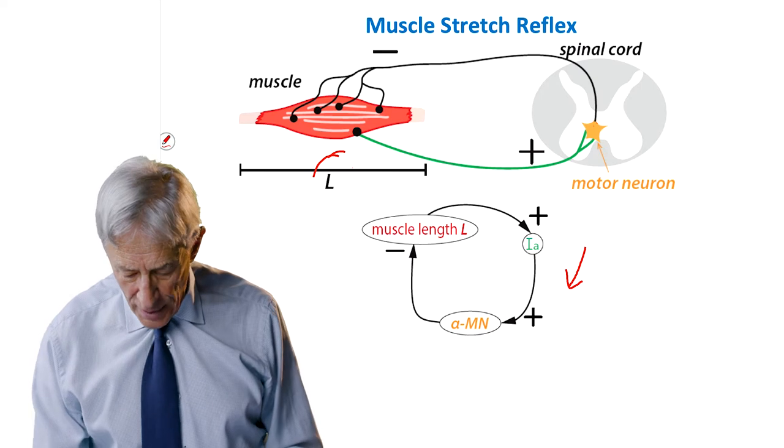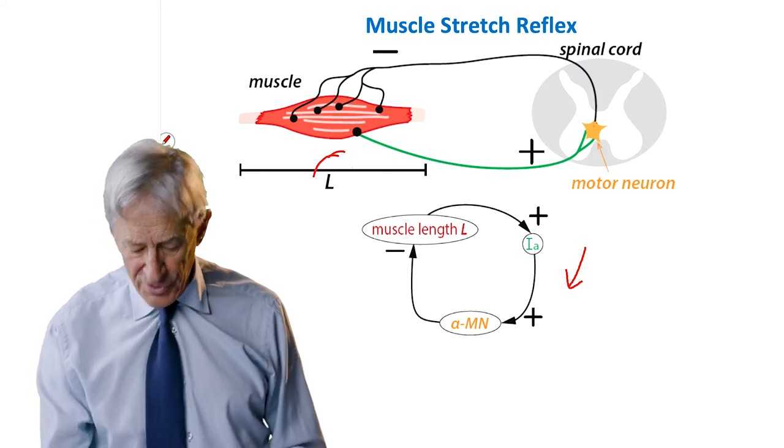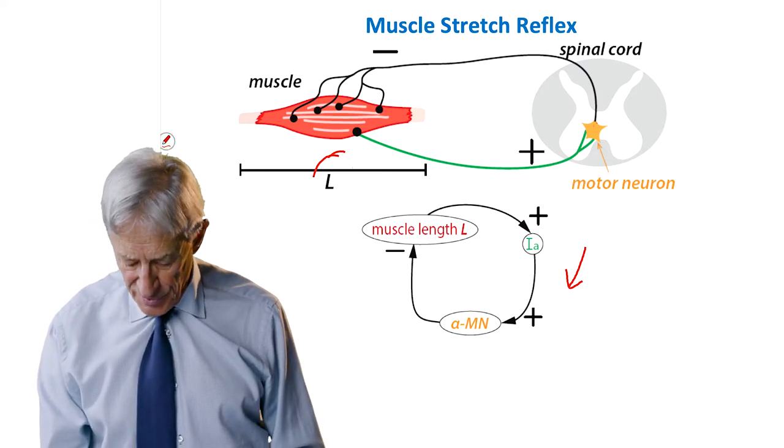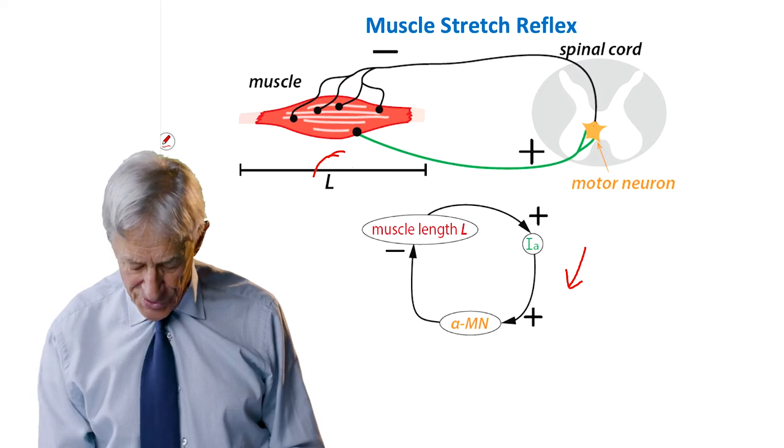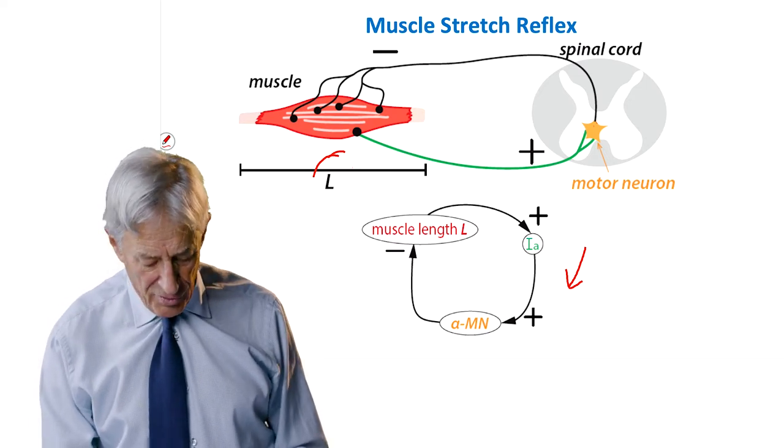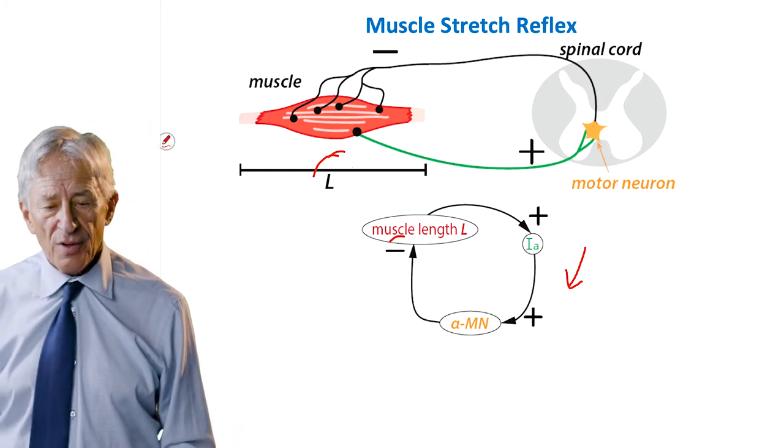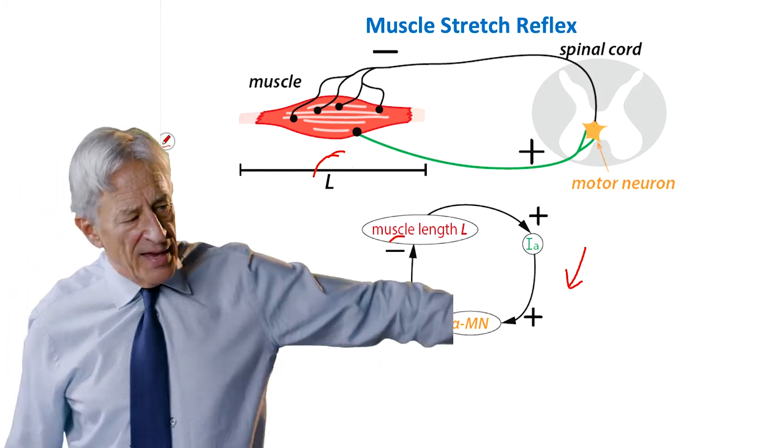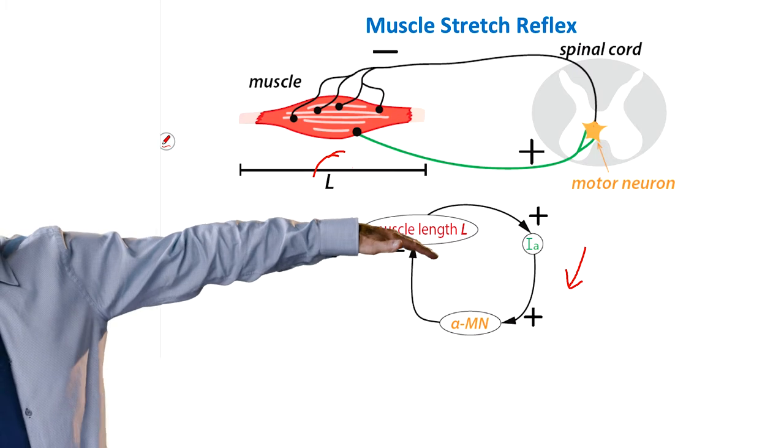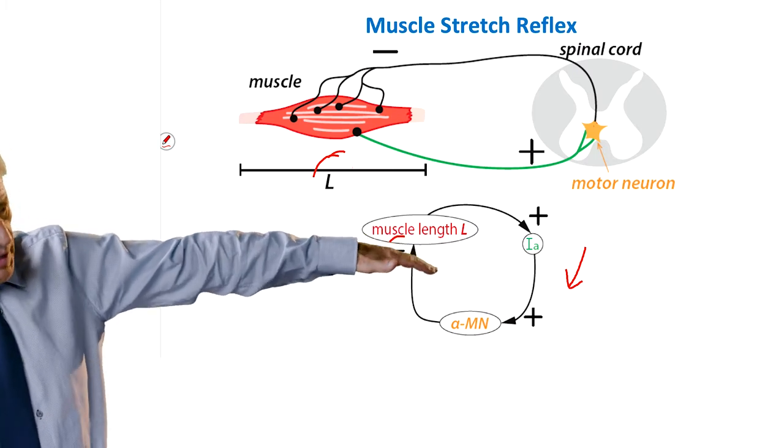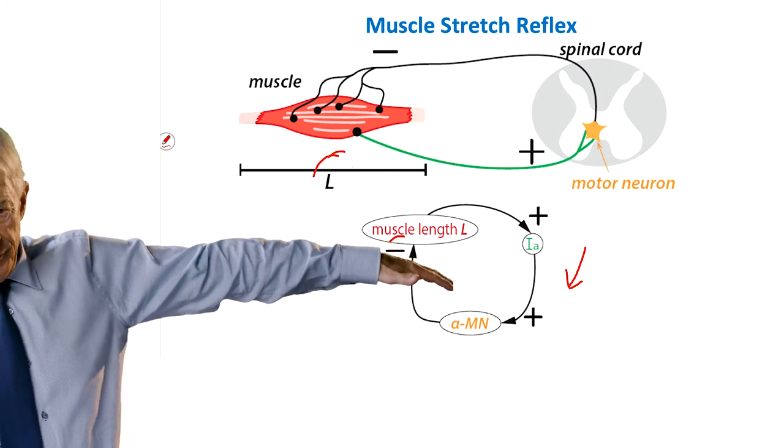So increased L increases motor neuron firing. Increased motor neuron firing decreases L. So we have a beautiful example of a negative feedback loop. The 1A afferent neuron that sends the signal to the motor neuron increases the motor neuron, and the motor neuron decreases muscle length. And so that, in a typical case, maintains a kind of constant value, as I'm doing right now.